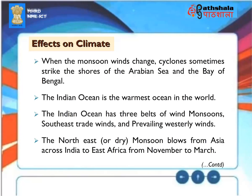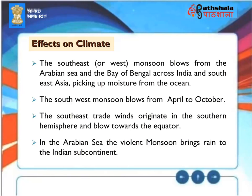Effects on Climate. When monsoon winds change, cyclones sometimes strike the shores of the Arabian Sea and the Bay of Bengal. The Indian Ocean is the warmest ocean in the world. It has three belts of wind: monsoons, southeast trade winds, and prevailing westerly winds. The northeast or dry monsoon blows from Asia across India to East Africa from November to March. The southwest monsoon blows from April to October, while the southeast trade winds originate in the southern hemisphere and blow towards the equator. In the Arabian Sea, the violent monsoon brings rain to the Indian subcontinent.